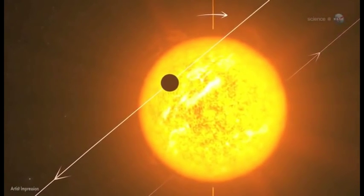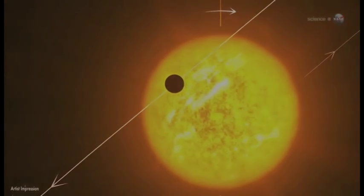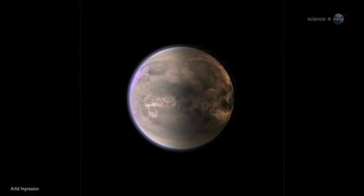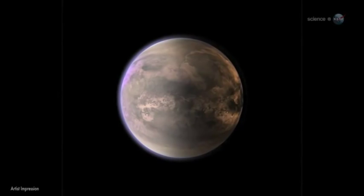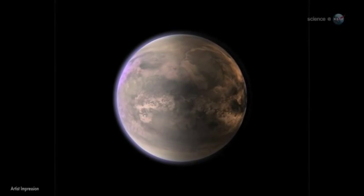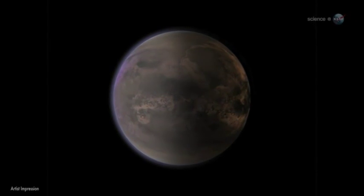So 55 Cancri e is better understood than most. When 55 Cancri e was discovered in 2004, initial estimates of its size and mass were consistent with a dense planet of solid rock. Spitzer data suggests otherwise.